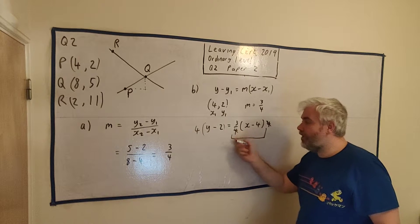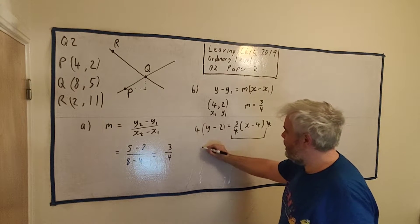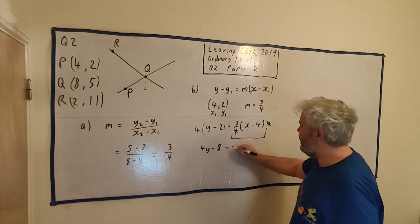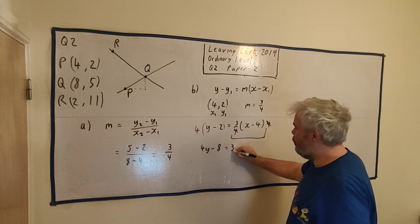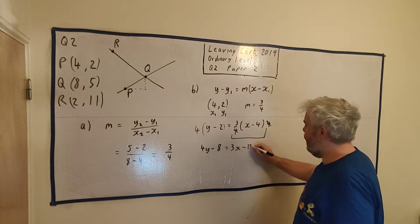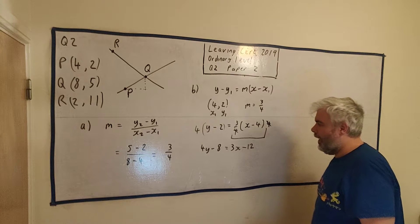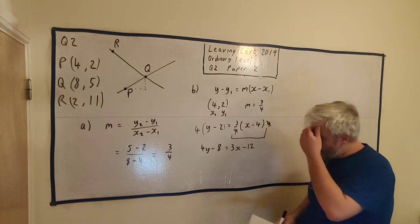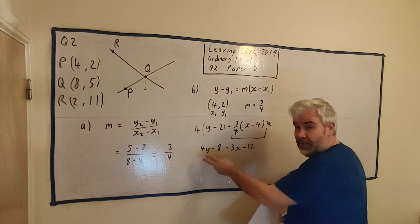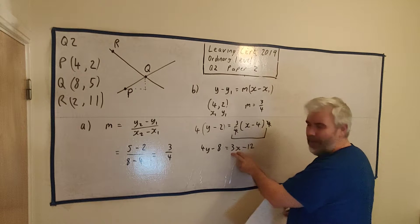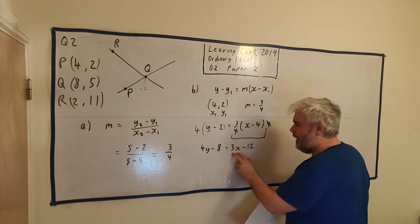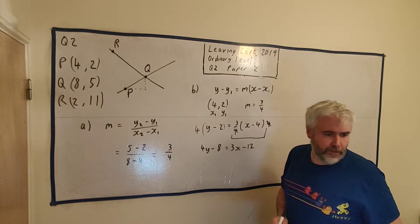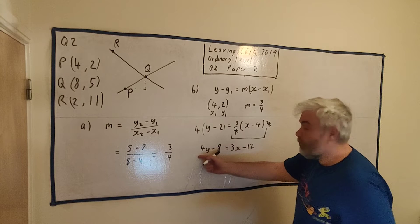Let's multiply this out. We get 4Y minus 8 equals 3X minus 12. They asked us to get everything on the same side, all the X's and Y's. I like to keep my X positive. So let's take 4Y from both sides.